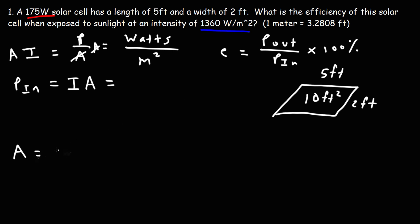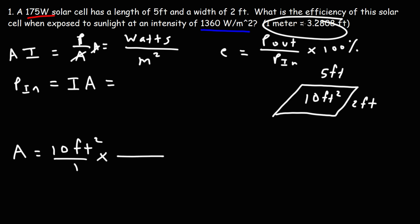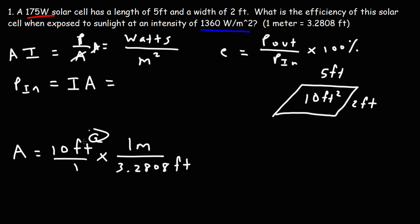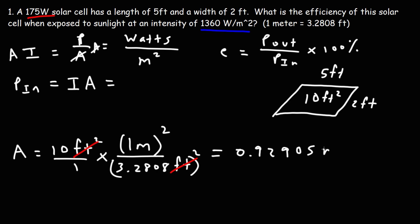We need to convert square feet to square meters. Using the conversion factor, 1 meter equals 3.2808 feet. We want the unit 'feet' to cancel, so we put feet on the bottom. Because we have square feet, we need to square the conversion factor so that square feet cancels. So it's going to be 10 divided by 3.2808 squared, and you should get 0.9290 square meters.